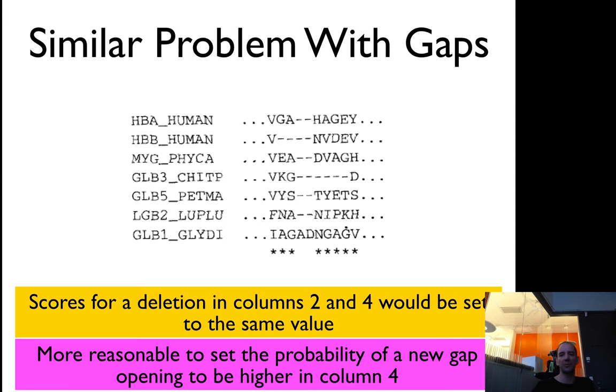The same thing with gaps. The score for deletion in column 2 and 4 will be set the same value, but it's more likely to have a position, because you have a gap there, but it would be more likely to have a gap in position 4. So you really have to do the gaps in some obvious rule there.